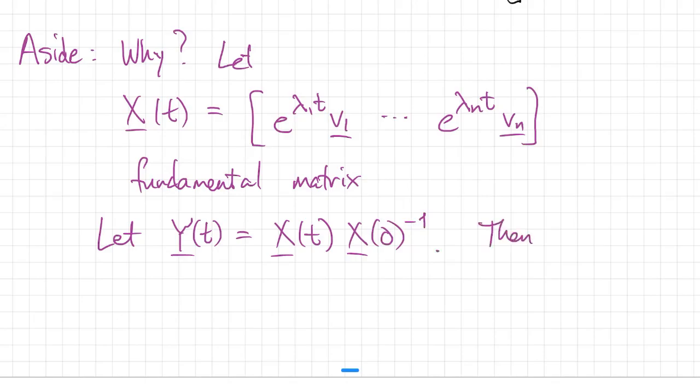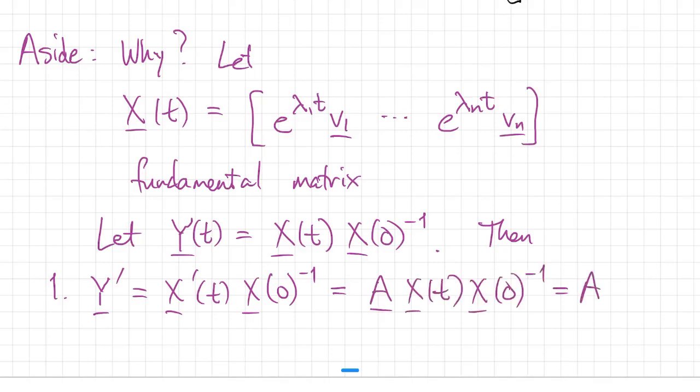We'll define a new matrix Y of t as X of t times the inverse of X at zero. And then we can find two important facts. If we differentiate Y, we just take the derivative of that first X and the second one is constant. So Y prime is equal to A times X times X zero inverse, since X is fundamental. And by the definition of Y, that's just A times Y.